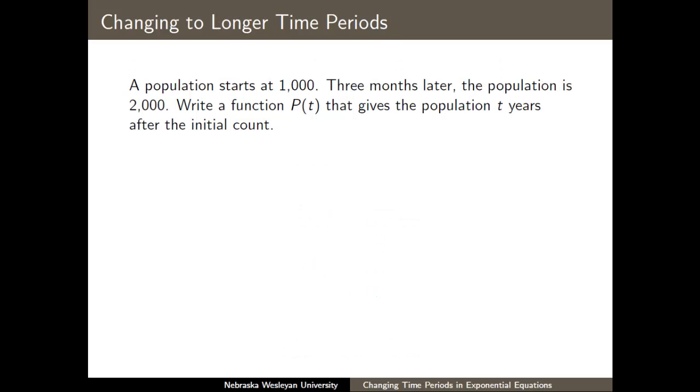Here's a similar example where we'll switch to a longer time period. Here, the population starts at 1,000, and in three months' time, the population is 2,000. How can we model the population, again, where t is the number of years after the initial count? Well, we need to decide what fraction of a year is three months.